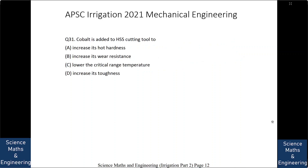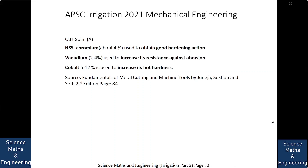Cobalt is added to high speed steel cutting tool to: (a) increase its hot hardness, (b) increase its wear resistance, (c) lower the critical range temperature, or (d) increase its toughness. The answer is cobalt is used to increase the hot hardness. In high speed steel, chromium (about 4%) is used to obtain good hardening action, vanadium (2 to 4%) is used to increase resistance against abrasion, while cobalt (5 to 12%) is used to increase its hot hardness.